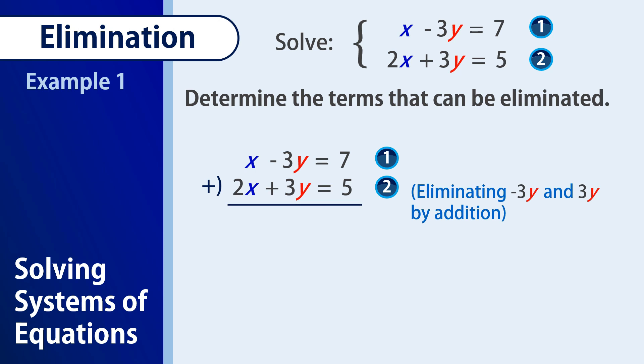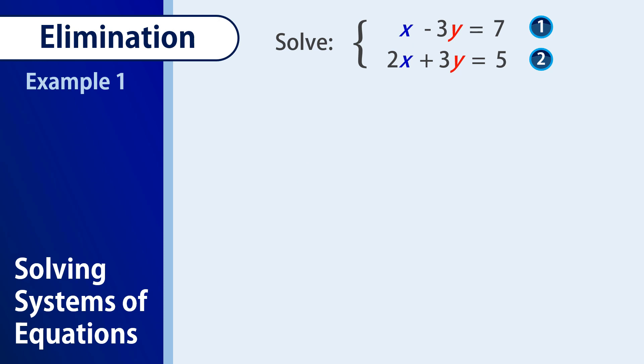Adding the two equations, we have x plus 2x equals 3x, but your negative 3y plus 3y will become 0. Therefore, your 7 plus 5 equals 12 will be equal to 3x. And by dividing both sides by 3, we have x and our x is equal to 12 over 3, or that is equal to 4.